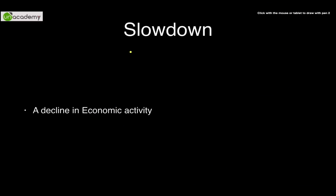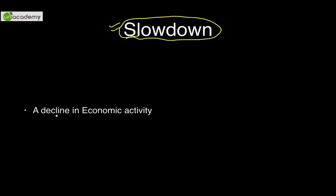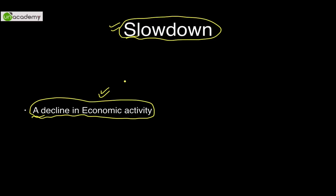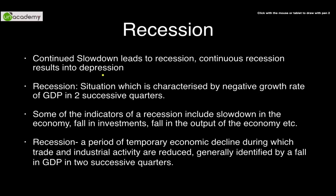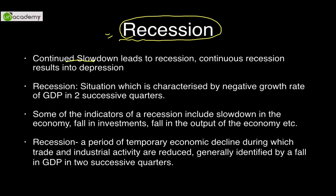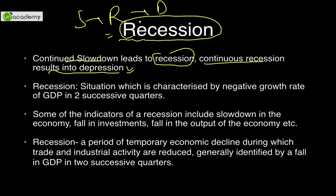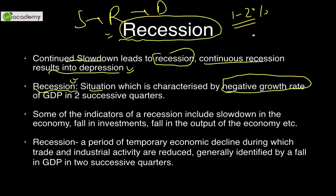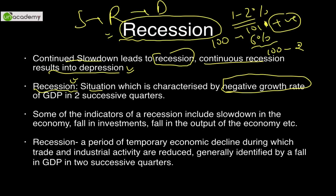Slowdown is a very basic layman's term meaning any decline in economic activity — demand decreasing, supply decreasing, or growth declining overall. A slowdown, if not controlled, is usually followed by recession, and continuous recession results in depression. Recession is a situation of negative growth rate. For the USA, normal growth is roughly 1–2%; for India it has been around 6%. If GDP falls — say from 100 billion dollars to 99 billion — that is a negative growth rate.